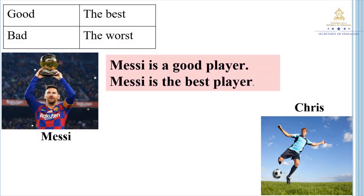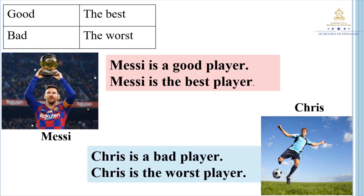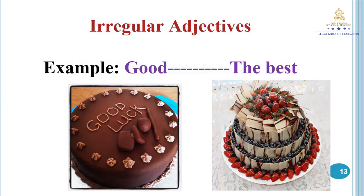Messi is a good player. Messi is the best player. Chris is a bad player. Chris is the worst player. In this case, there is no rule — you have to learn the superlative. Example: good — the best.